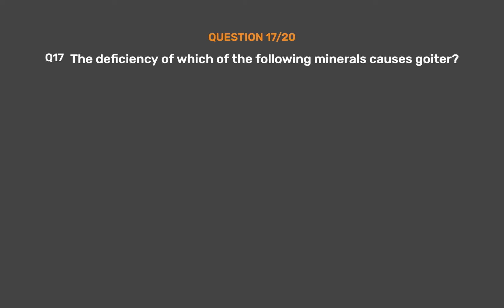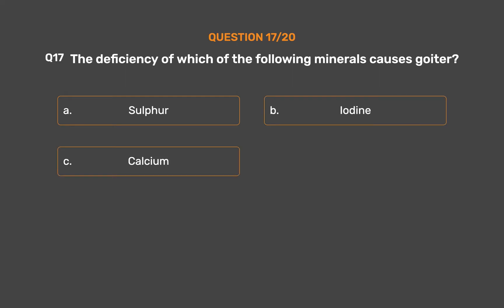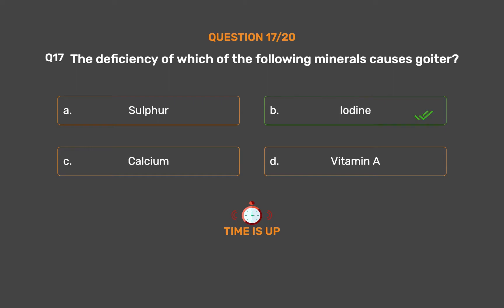Question number 17. The deficiency of which of the following minerals causes goiter? Option A: Sulfur. Option B: Iodine. Option C: Calcium. Option D: Vitamin A. The correct answer is Option B, Iodine.